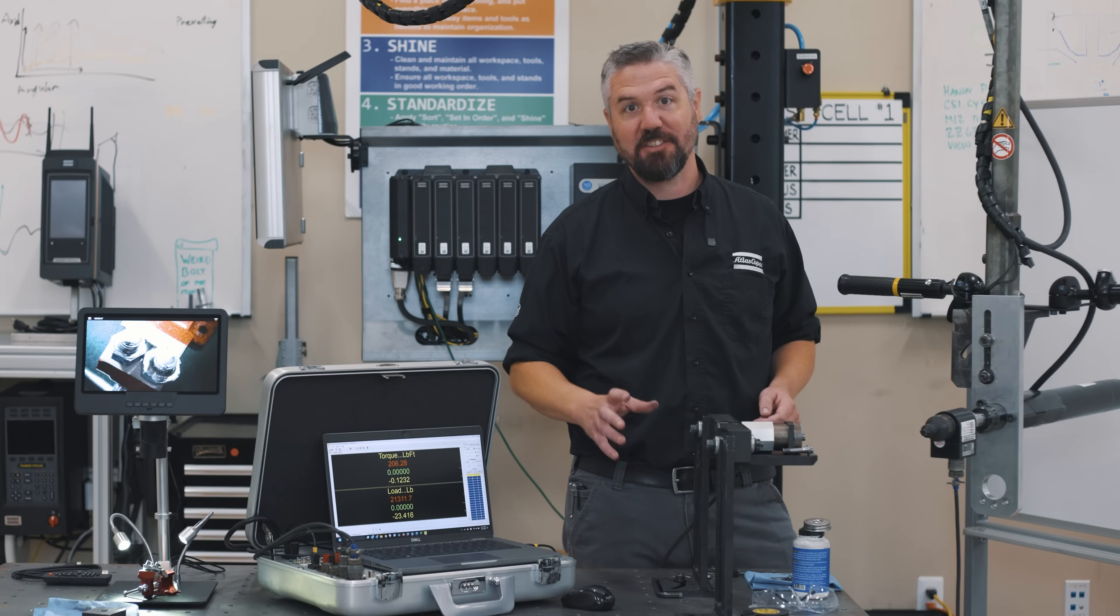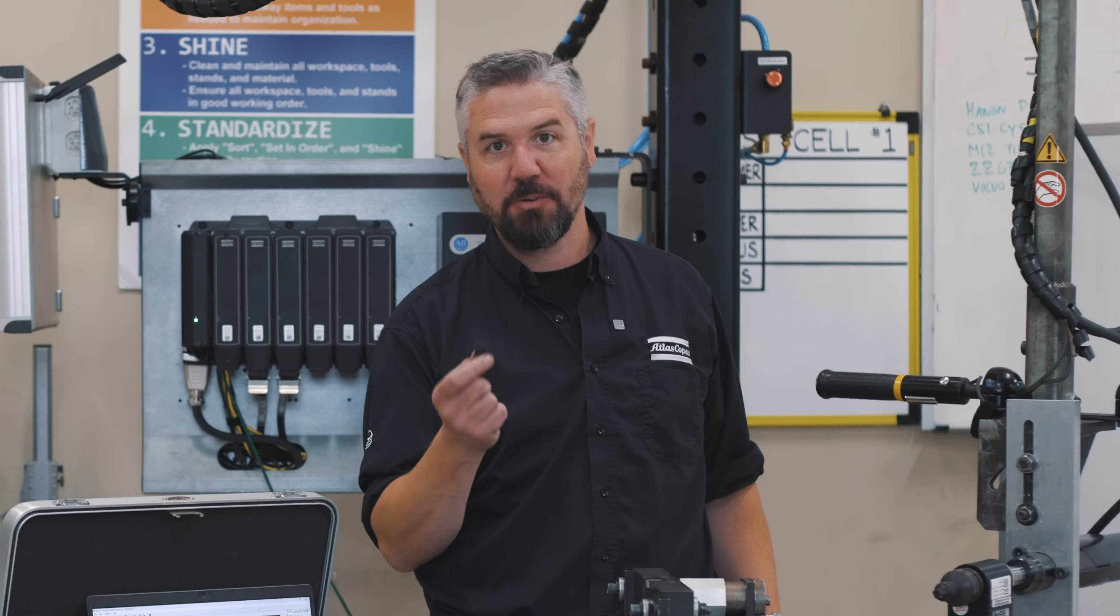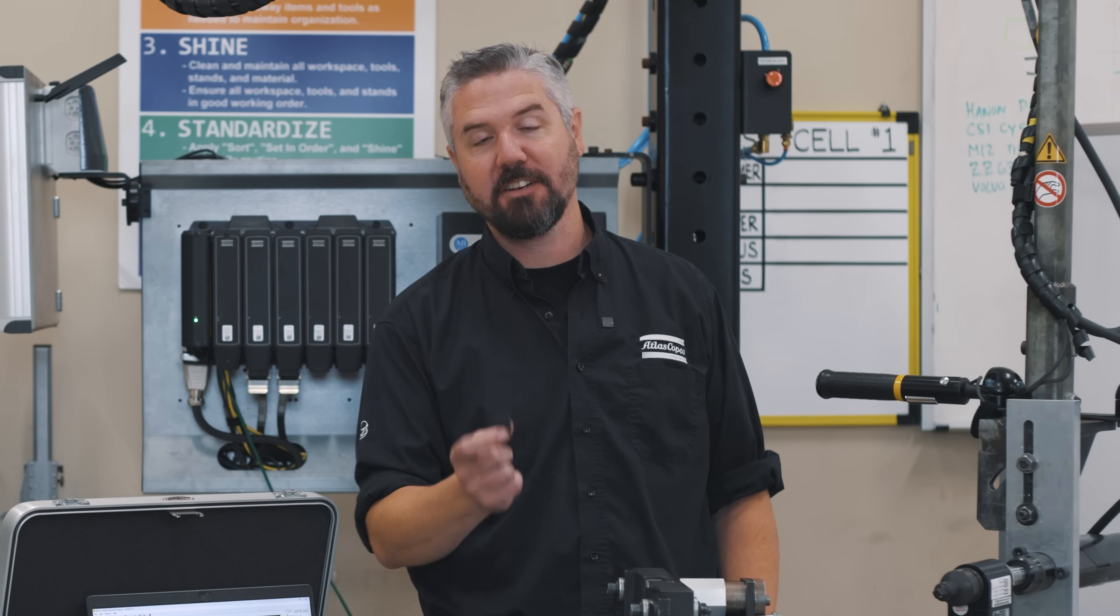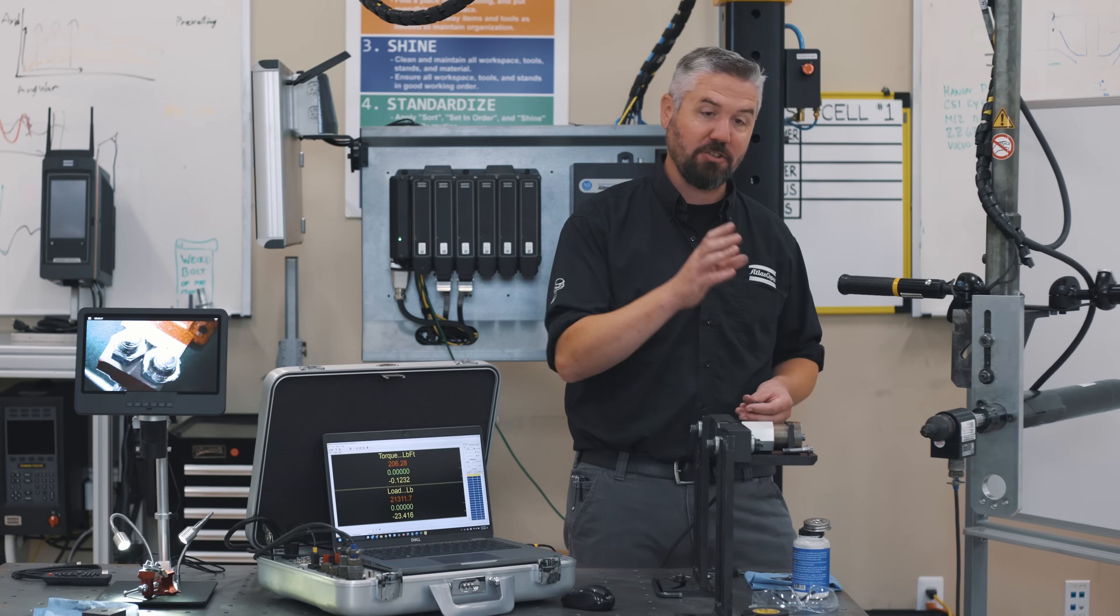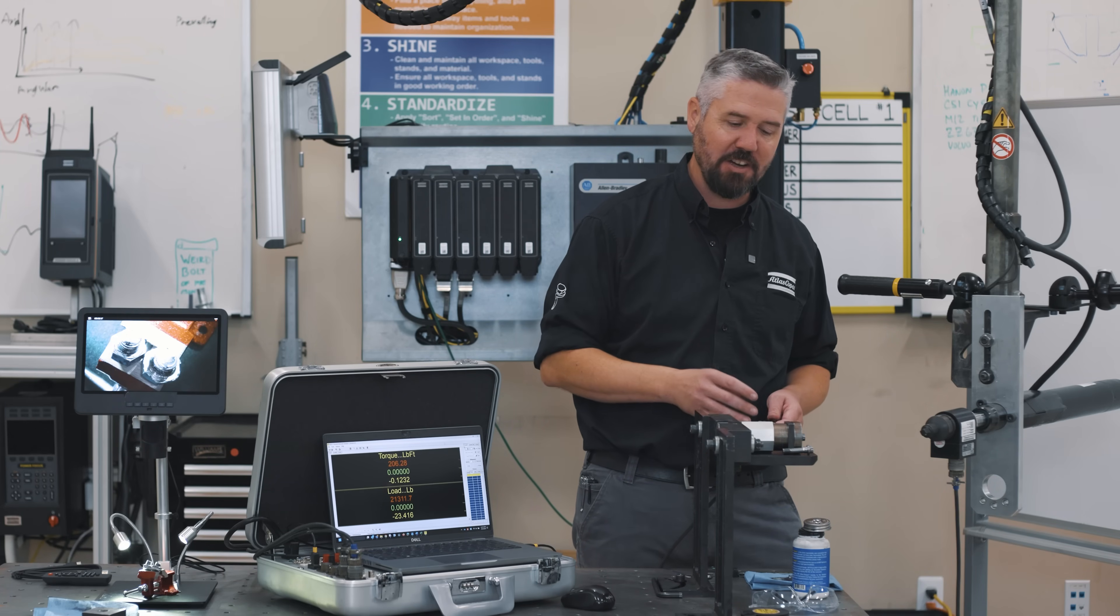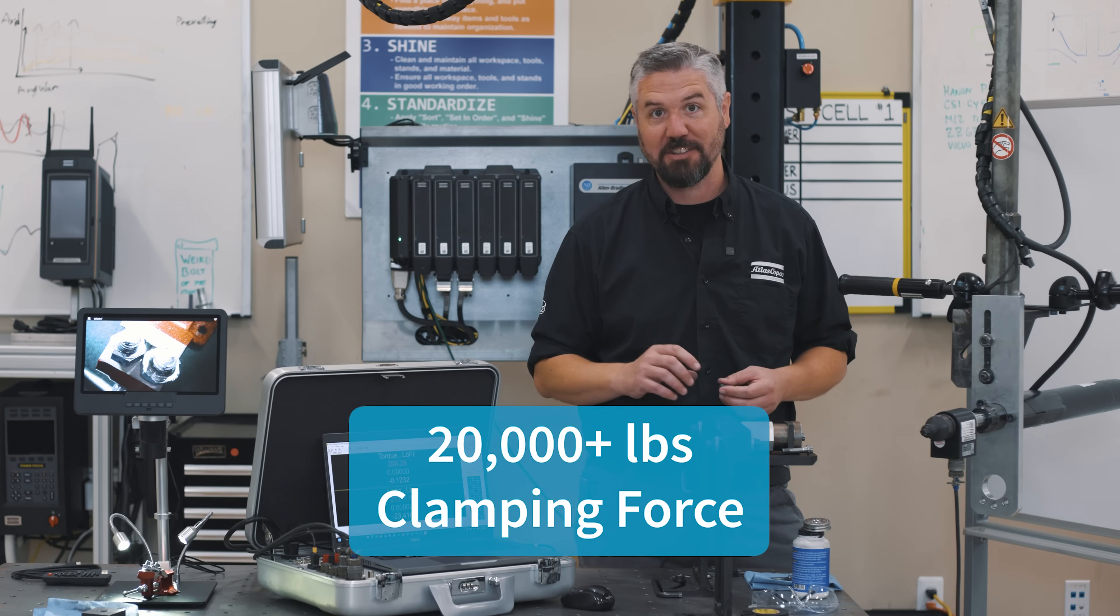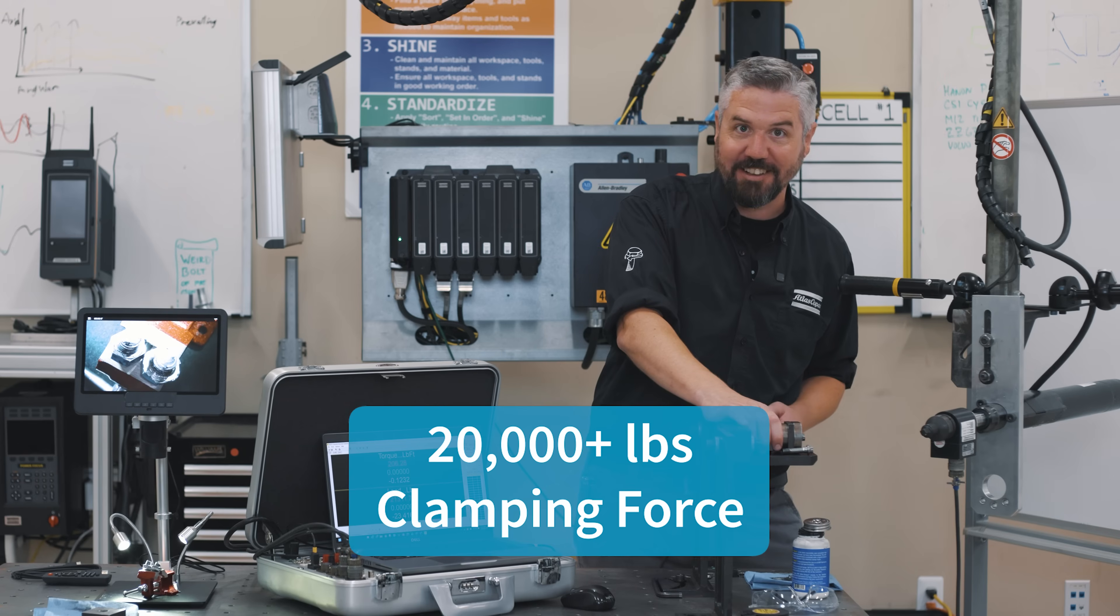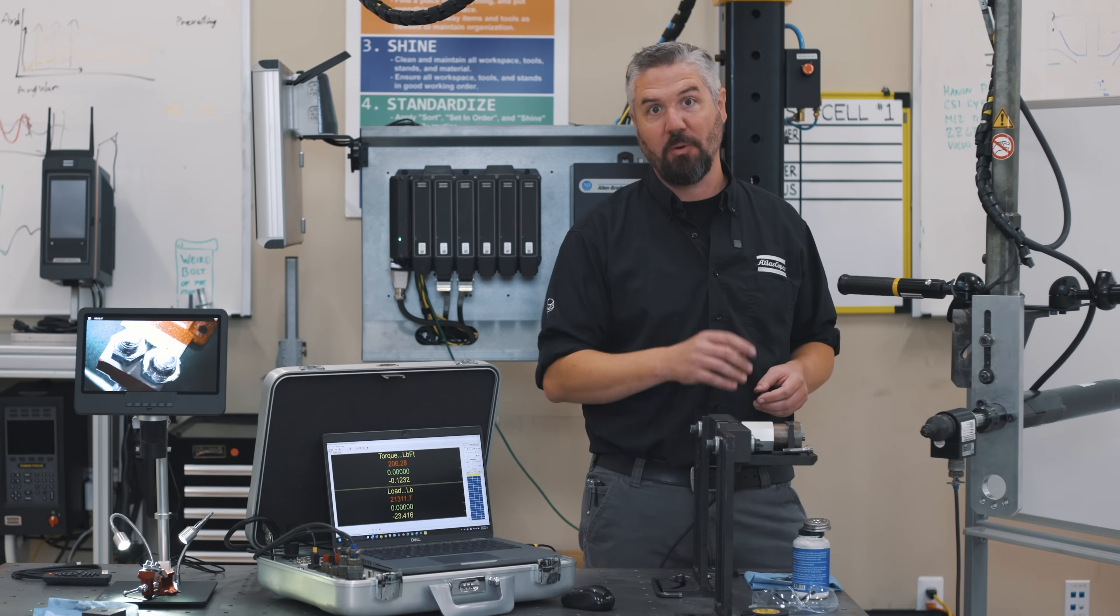That was our failure attempt at the ultra high tensile strength fastener, but our socket was the weak point. I shouldn't have trusted a random socket from our toolbox. I should have ordered a real socket to put the right amount of torque on this. We did get to more than double the installation torque. We achieved over 20,000 pounds of clamping force, but now my load cell is trapped and I'm going to have to get a cutoff wheel to get this fastener all the way out.